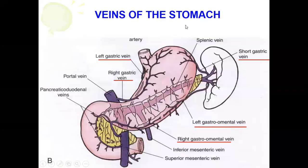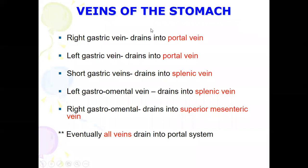For the veins of the stomach, they carry similar names to the arteries: left gastric vein, right gastric vein, short gastric vein, left gastro-omental vein, and right gastro-omental vein. You need to know where each vein drains.